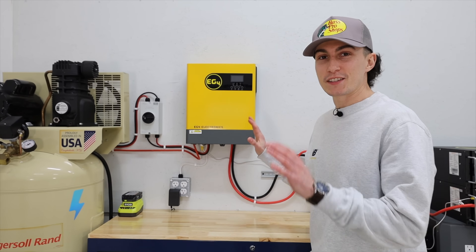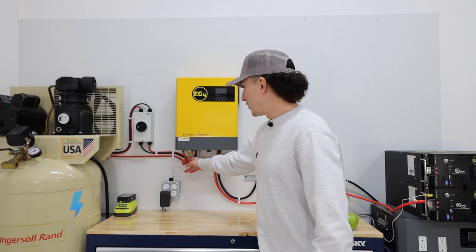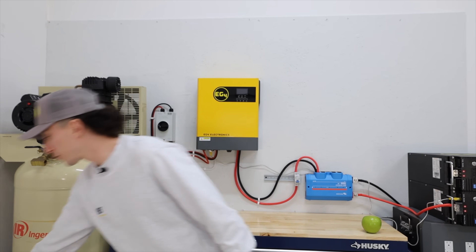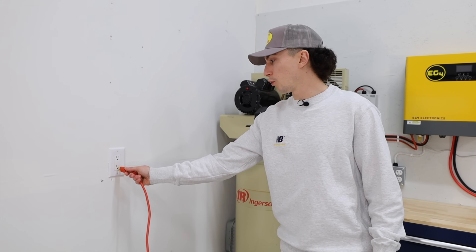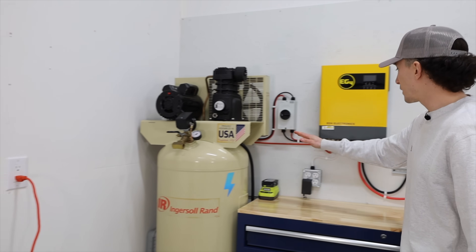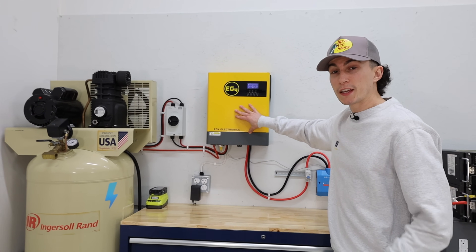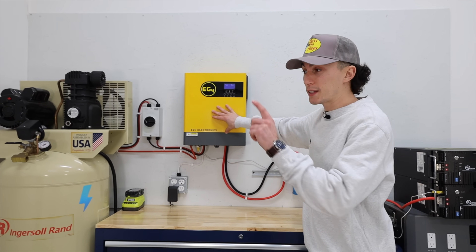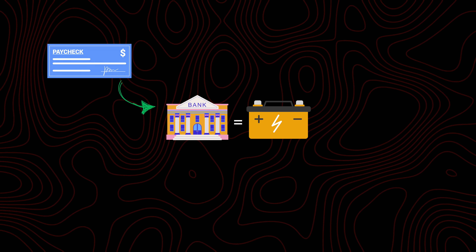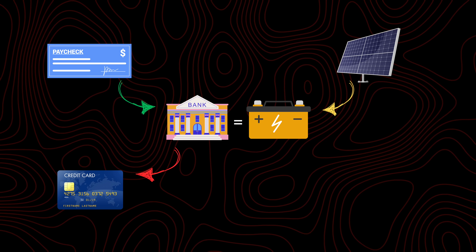This inverter also has the option for AC in. If you plug this cord into the wall, you put 120 volts of power from the wall through the cable and through the inverter — it inverts from AC to DC — and sends it over to the batteries for storage. An analogy we like to use is your bank account. Your bank account is like your battery bank, your paycheck is like your solar input, and your spending habits are like your inverter.